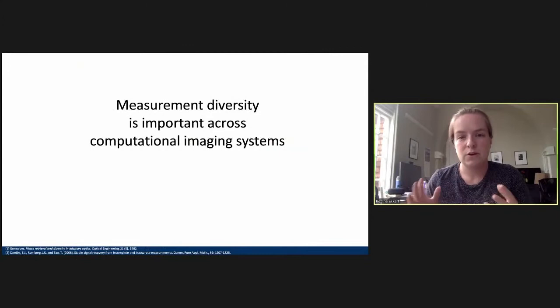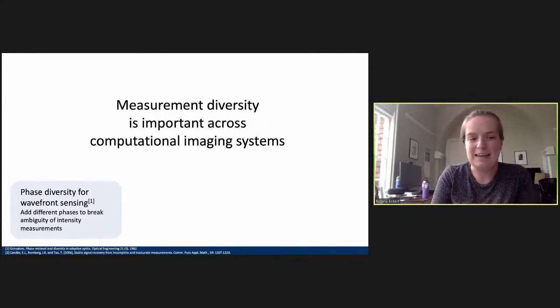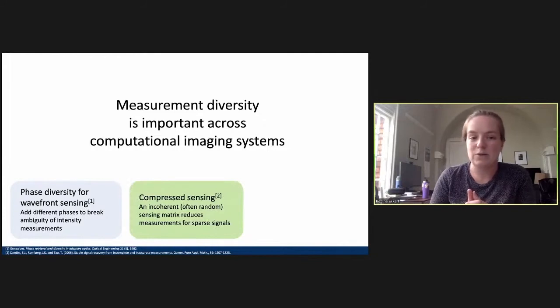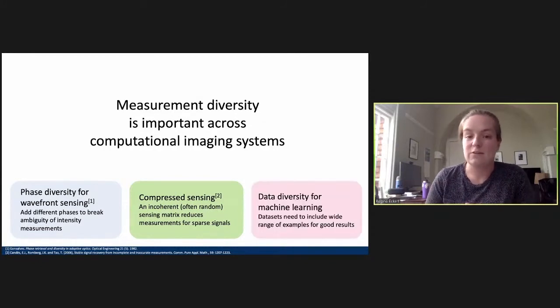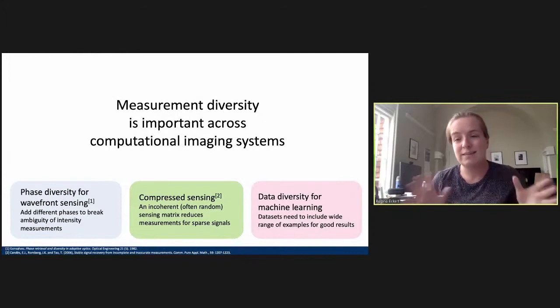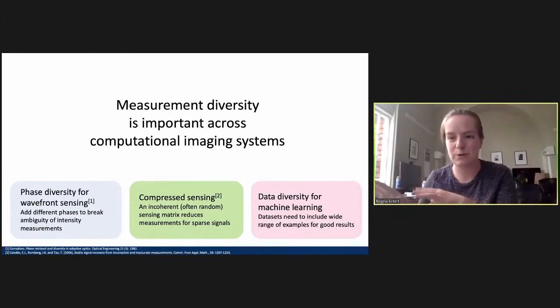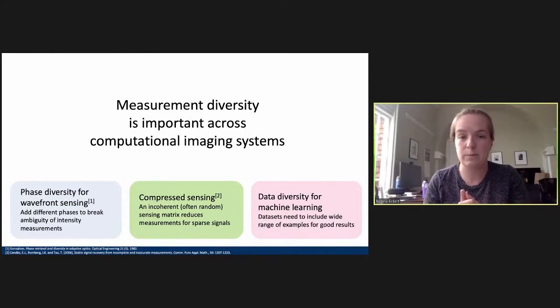All right. So, just kind of taking a little bit of a broader picture away from this. I just talked a lot about some specifics for my system. But I just want to say that measurement diversity, which I've seen is useful in my system, is also important across computational imaging systems. So, you might have already been thinking this, right? There's some stuff from the 80s where phase diversity is used for doing wavefront sensing. There's also compressed sensing, obviously, where you have some incoherent sensing matrix that can reduce the measurements that you need for sparse signals. You can also think about having diverse data for machine learning, right? Where we need a wide range of samples in our data sets to have good results. So, this isn't something that's just applicable for sparse systems, or just applicable for non-convex systems. It's something that actually spans across all of these imaging systems, and therefore is very useful to think about.